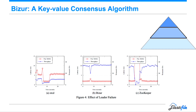So we built our own consensus algorithm, which we call Bizur — meaning distributed or decentralized in Hebrew. You can see Bizur in the middle compared to ETCD on the left and Zookeeper on the right. Those are two well-known open source consensus systems. What you can see is how they behave during a node failure.